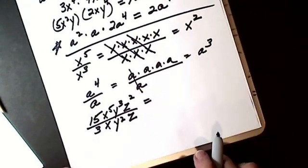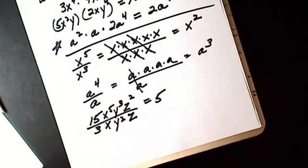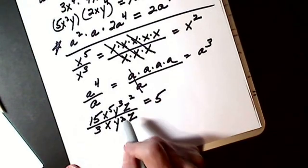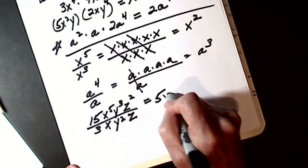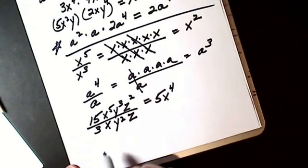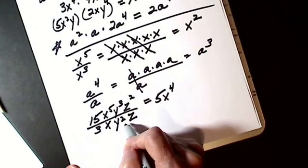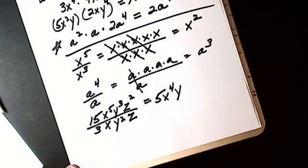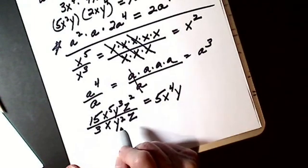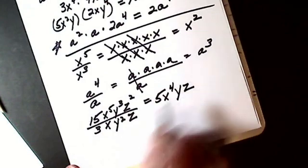I divide coefficients. 3 into 15 is 5. I subtract exponents. You've got to remember that's a 1. So I'm left with x to the fourth. y cubed divided by y squared gives me a y. I subtract exponents. I'm going to get a z.